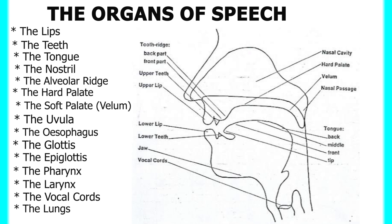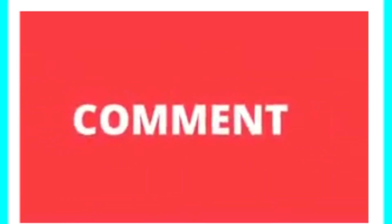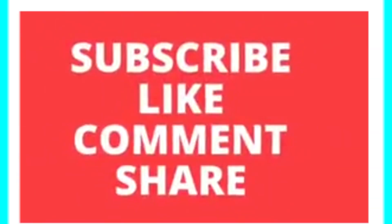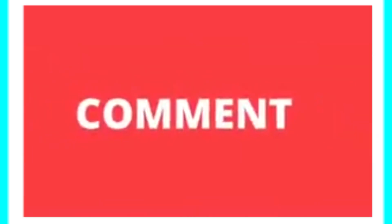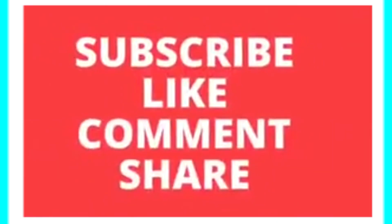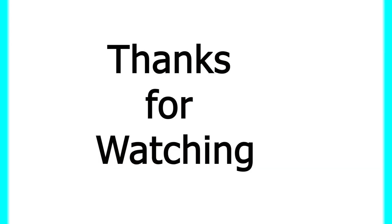Now we've gone through all the organs of speech and you know the organs involved in the production of speech sounds. Remember, the lips alone do not produce speech sounds — we have different organs working together with the lips to produce speech sounds. When you're speaking, take note of the organs of speech involved. If you like this video, give it a thumbs up, subscribe to Extra Stars Academy, and press the bell icon to be notified of more uploads. See you in the next class — take care, stay safe!